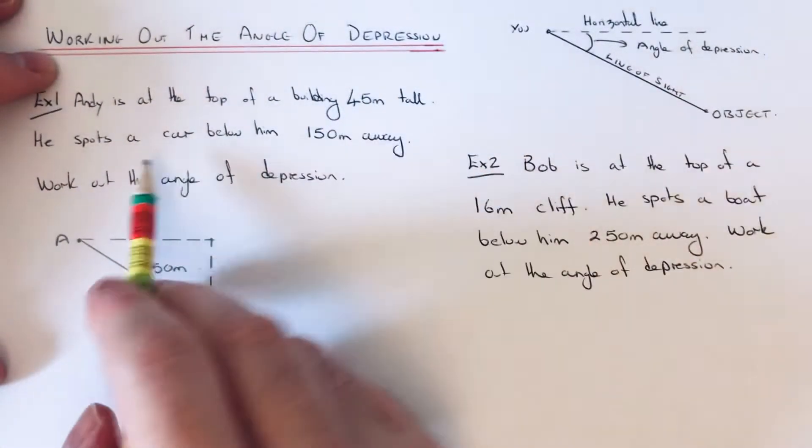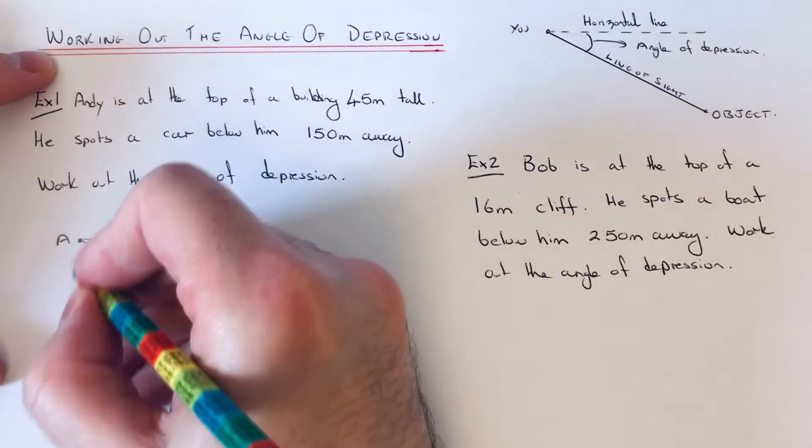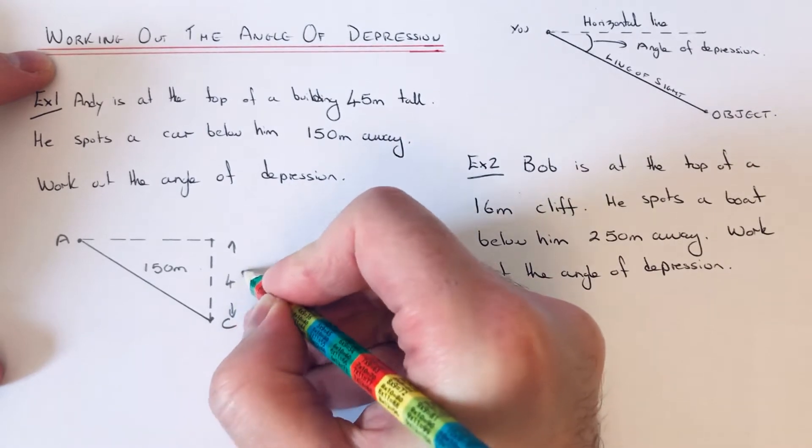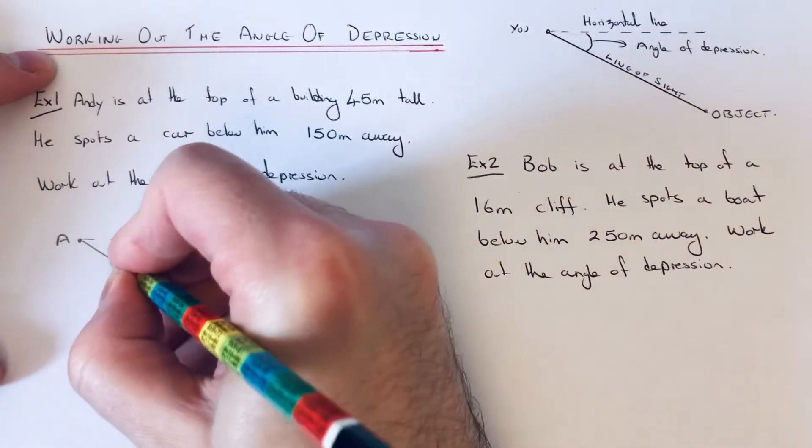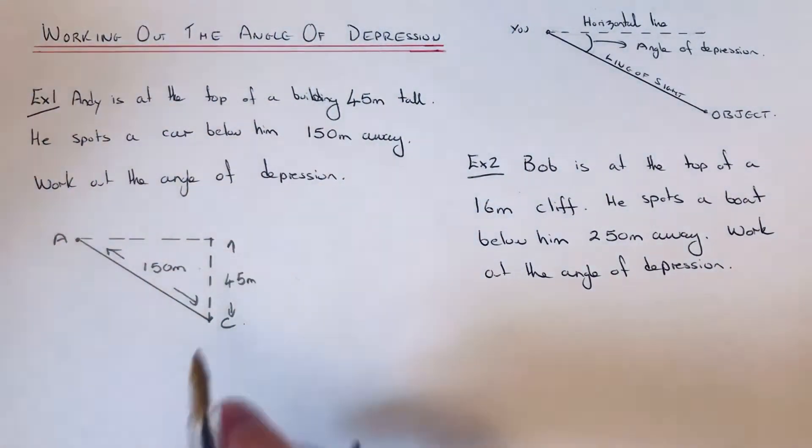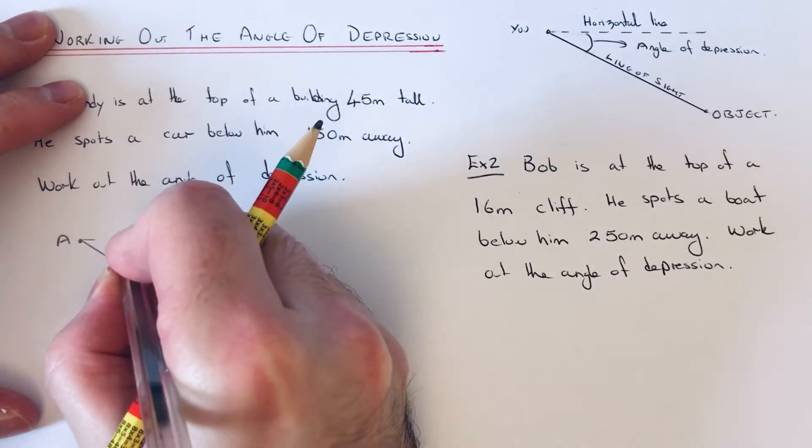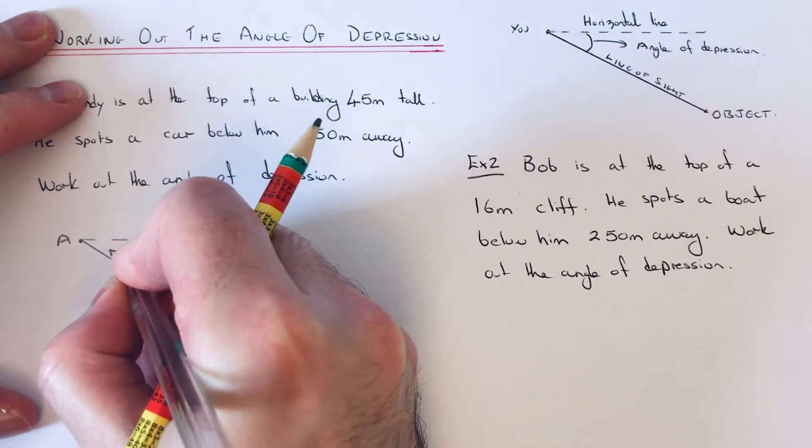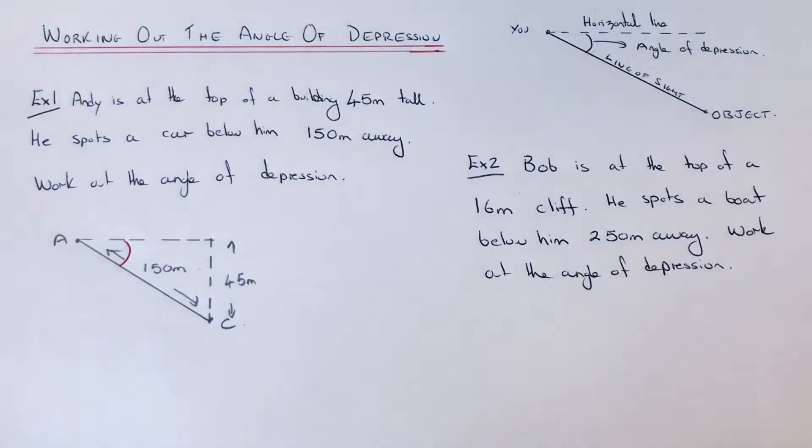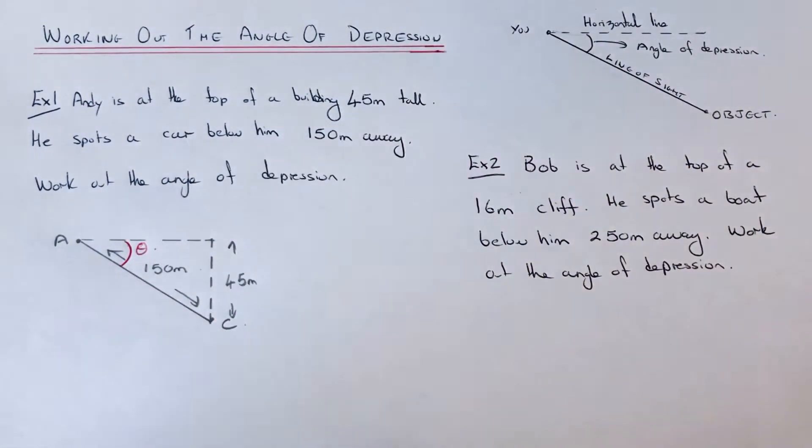So we're also given the height of the building, which is 45 metres tall. So that's the same as this length here. And we're after the angle of depression, so that's the angle between the horizontal line of sight and the distance going diagonally down there. So this is the angle of depression. Let's call that theta.